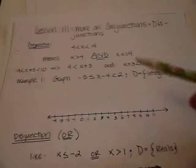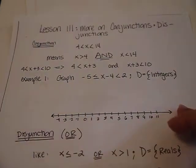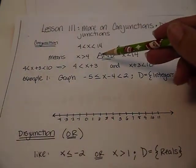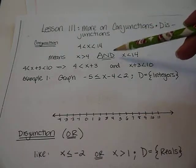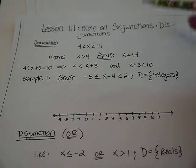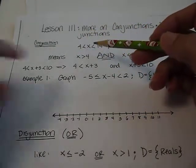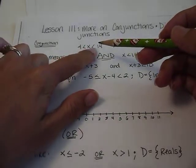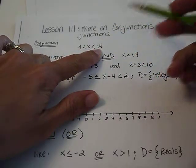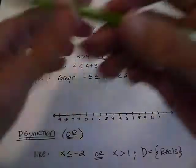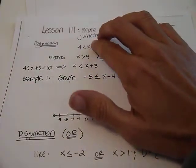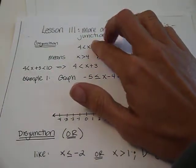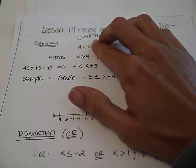We're going to talk about conjunctions first. The big word that I think of with conjunction is the word and. So let's pretend we have 4 is less than X is less than 14. What that means is we can cover this up and say 4 is less than X, or X is greater than 4,